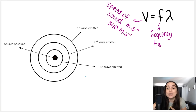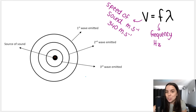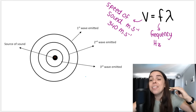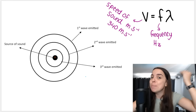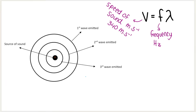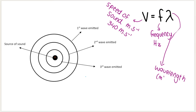Frequency is related to pitch. The higher the frequency, the higher the pitch. The lower the frequency, the lower the pitch. Frequency and pitch are directly proportional. And then we have wavelength, which in our formula is measured in meters.